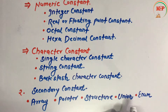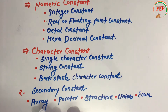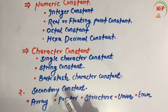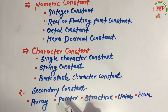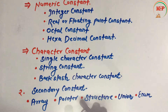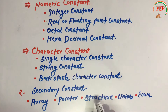Array, structure, union, and enum are types of secondary constants. Array is a collection of similar types of data elements, whose definition will be covered in a later chapter. Pointer is a special type of variable that is used to hold the address of another variable.